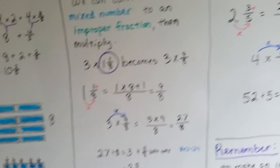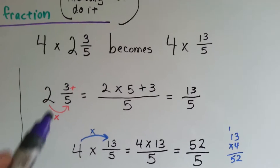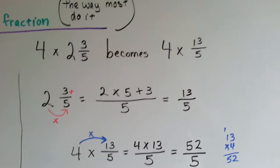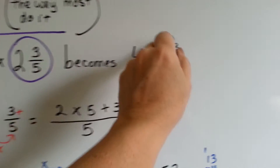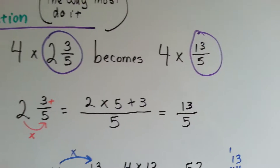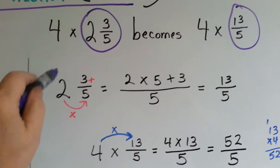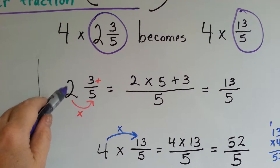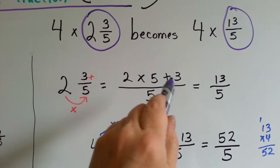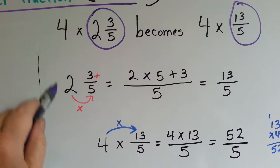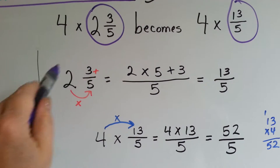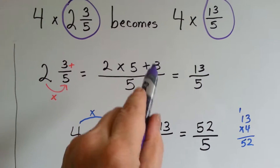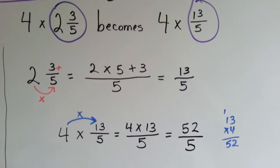Now let's do 4 times 2 and 3 fifths using improper fractions. 2 and 3 fifths becomes 13 fifths. Here's how: multiply the 2 times the 5 and add the 3 — that's 2 times 5 plus 3. We go kind of counter-clockwise. 2 times 5 is 10, plus 3 is 13 fifths. Now we have our improper fraction.